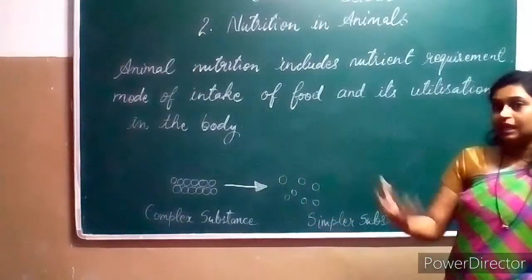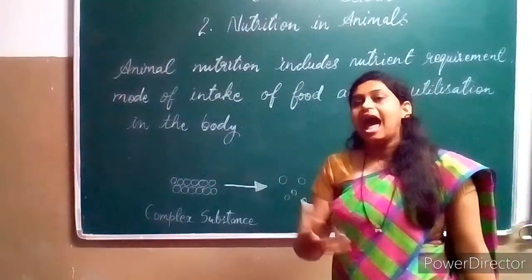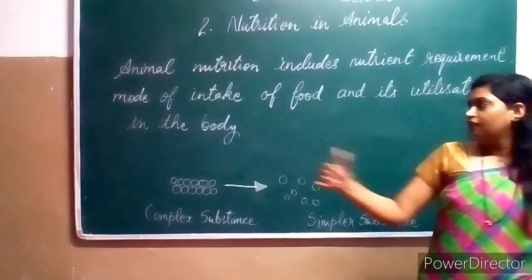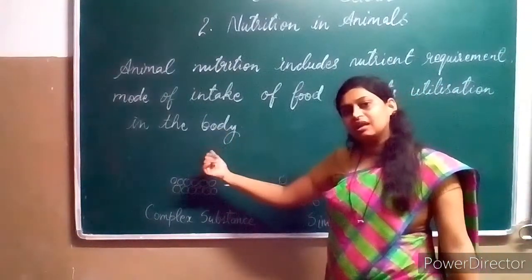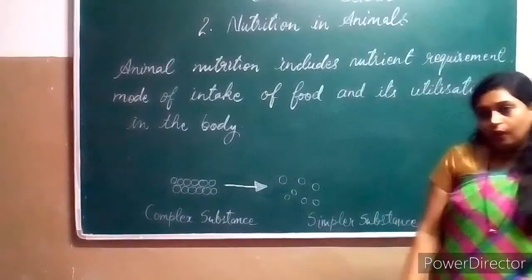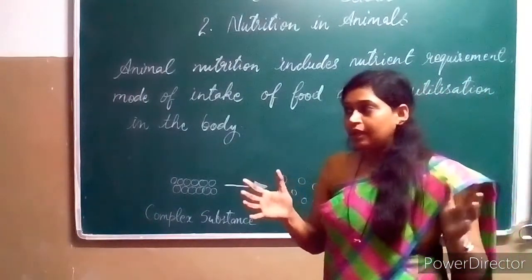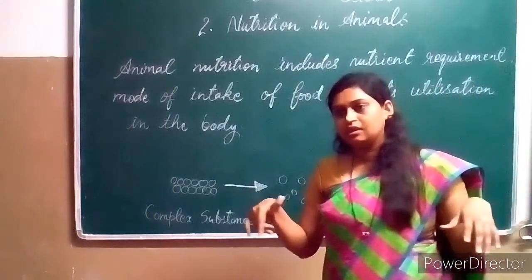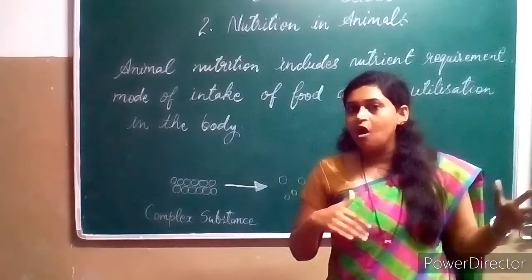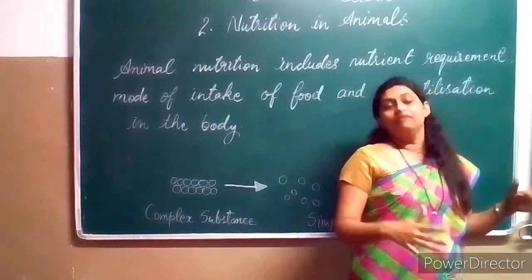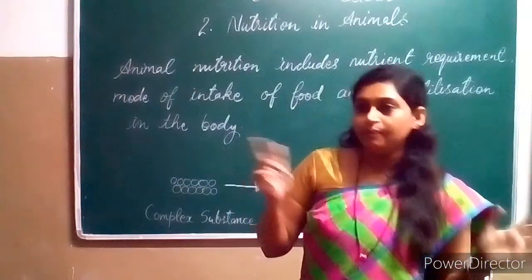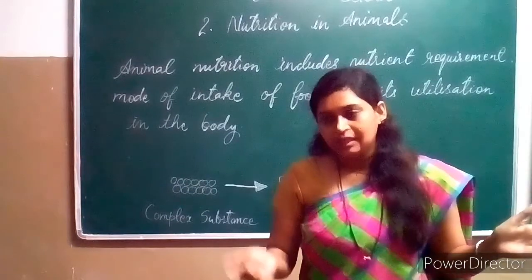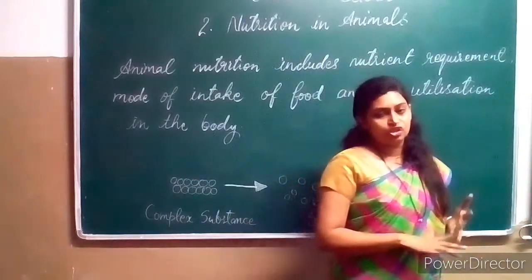Animal nutrition means the intake of food and that food being utilized by the body. The complex substances cannot be digested in such complex form, so they are converted into simpler substances. This process is known as digestion.